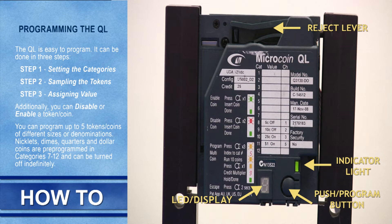Today we are going to learn how to program the Microcoin QL. The QL is a high speed 12 coin programmable coin acceptor. You can program up to five tokens of different sizes and denominations.